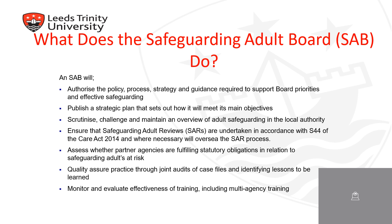What does the Safeguarding Adults Board do? The Safeguarding Adults Board helps and protects adults in its area from abuse and neglect through coordinating and reviewing a multi-agency approach. One of the ways in which they do this is by monitoring and evaluating the effectiveness of training. Overall, they are essential in safeguarding adults from harm and abuse.